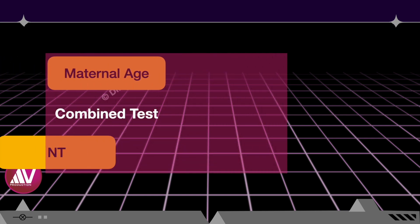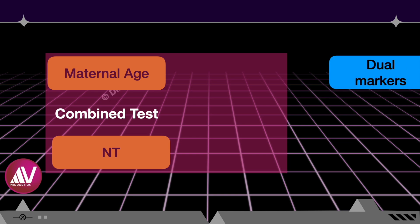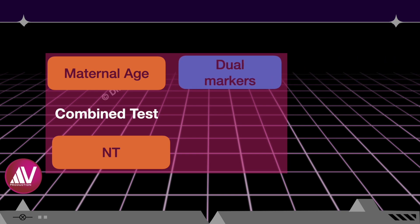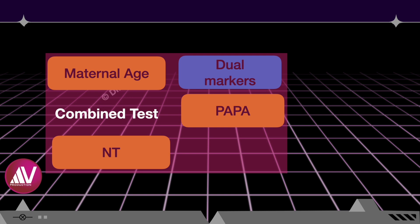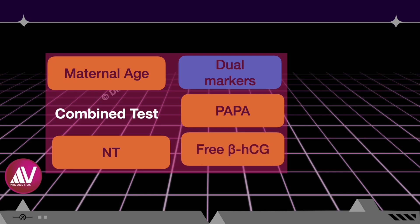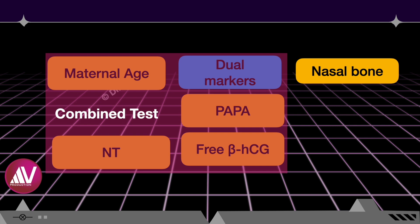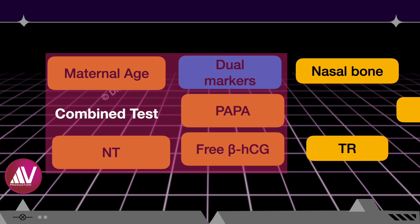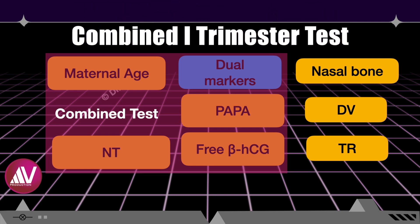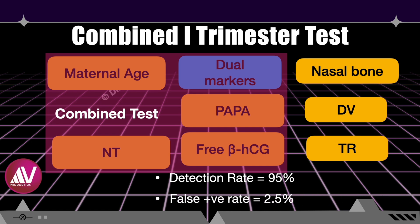A combination of the combined test — which involves maternal age, nuchal translucency, and the dual biochemical markers PAPP-A and free beta-hCG — along with other soft markers like nasal bone, tricuspid flow, or ductus venosus flow, is called the combined first trimester screening test. It has the highest detection rate of 95 percent and the lowest false positive rate of 2.5 percent among all the various tests discussed.